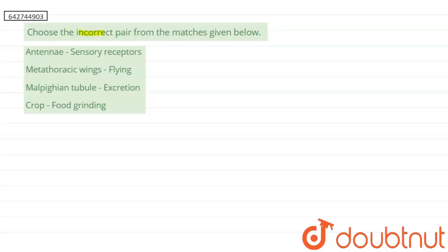Our question says choose the incorrect pair from the matches given below. First is antennae - sensory receptors, second is metathoracic wings - flying, third is malpighian tubule - excretion, and fourth is crop - food grinding.